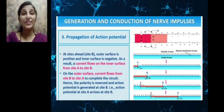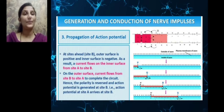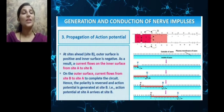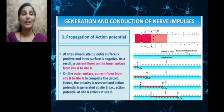The third step is propagation of the action potential. This action potential or nerve impulse has to be transmitted throughout the axon. At site B, which is ahead of site A, the inside is still negative and outside is still positive. As a result, current flows on the inner surface from site A to site B, and on the outer surface, current flows from B to A to complete the circuit. Hence the polarity is reversed and the action potential is now generated at site B.